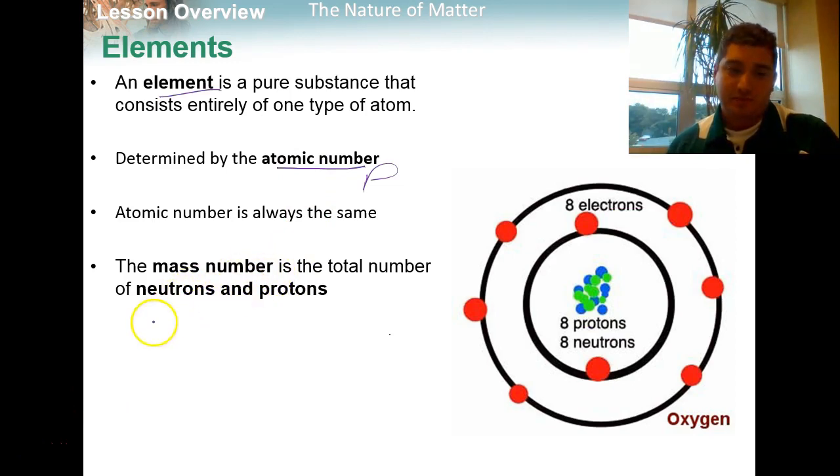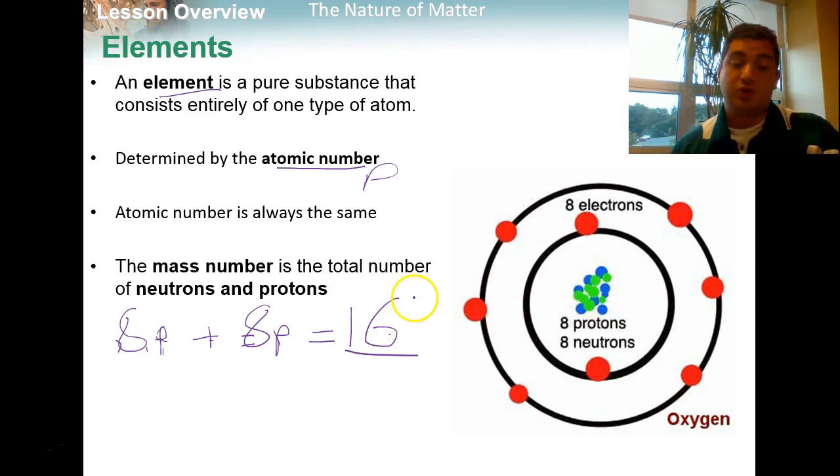So again, we'll talk in a little bit about why neutrons can change the number of neutrons, but generally, the number of protons is also equal to the number of electrons. So what is the mass number? We have eight protons in the nucleus, and if we add the amount of neutrons, which is eight, that will equal 16. So eight plus eight is 16. So the mass number for oxygen is 16, the total number of neutrons plus protons.